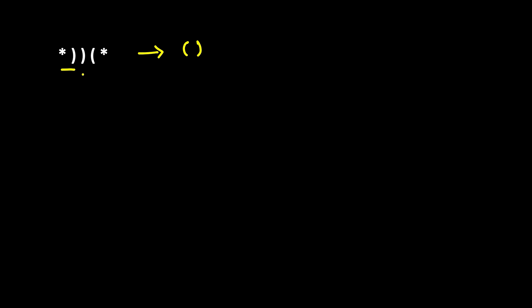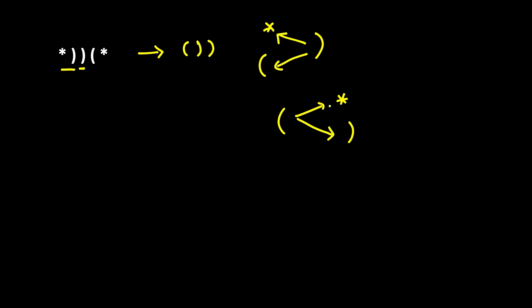Now let's see an example where it does not hold true. You try your best to balance it: you see a closing bracket with no opening bracket to the left, so you convert the asterisk to an opening bracket. It looks balanced up to that point, but then you encounter a third closing bracket with nothing left to match it. For every open bracket you need either a star or closing bracket to the right, and here you have neither, so it's unbalanced.